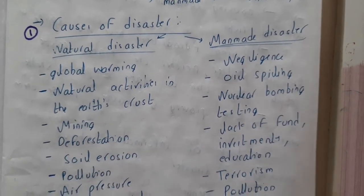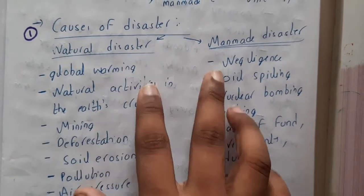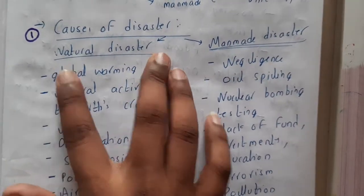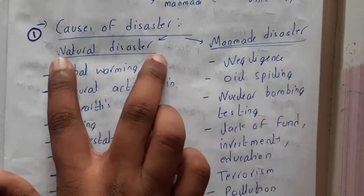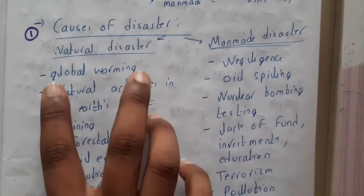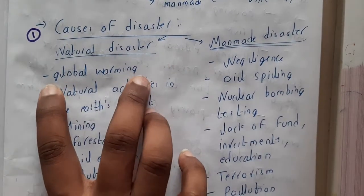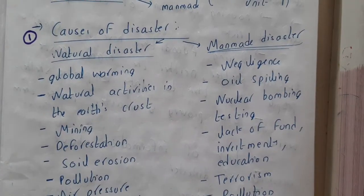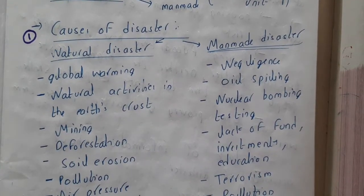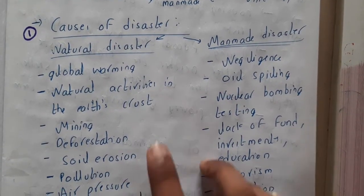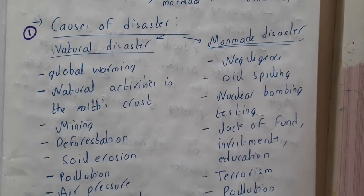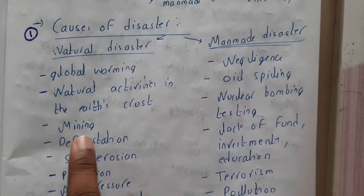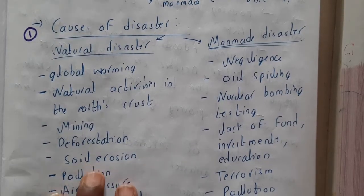Basically, the causes of disaster are divided into two types: based on natural disaster and based on man-made disaster. Natural disaster causes could be due to global warming, due to natural activities of the earth's crust. The main reason for activity in the earth's crust is volcanic eruptions, and those things occur within the earth's crust.